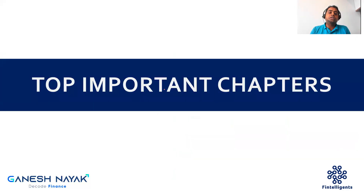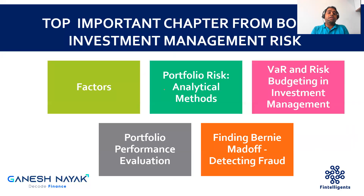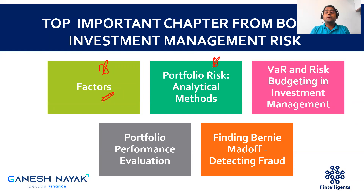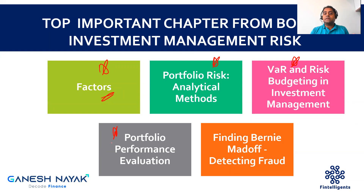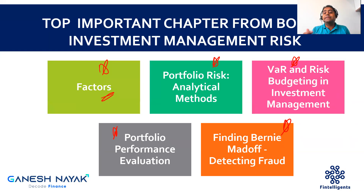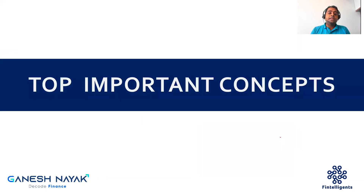Let me take you through the top five chapters I feel can come in your exam. First is the factor chapter — there can be good theory-related concepts tested. Second, portfolio risk analytics — a lot of calculation-driven concepts will be tested here. Third, VAR and risk budgeting — you must be clear on VAR concepts connecting back to Level 1. Fourth, portfolio performance evaluation — especially the M-squared part. Fifth, the Bernie Madoff case study — I expect questions from this chapter.